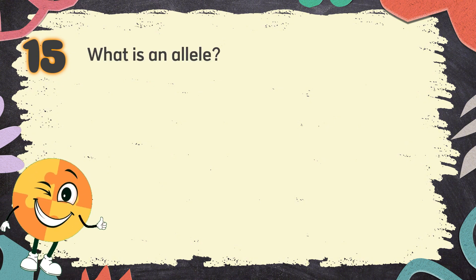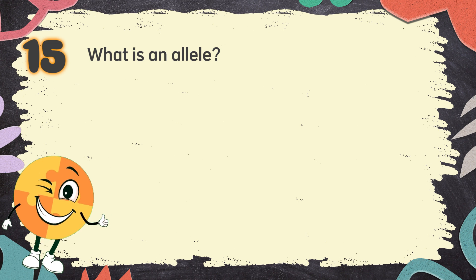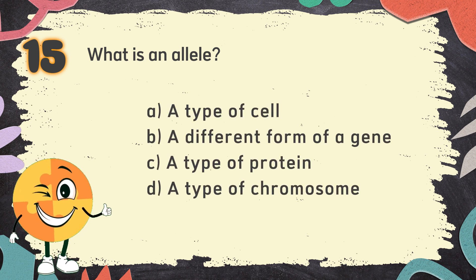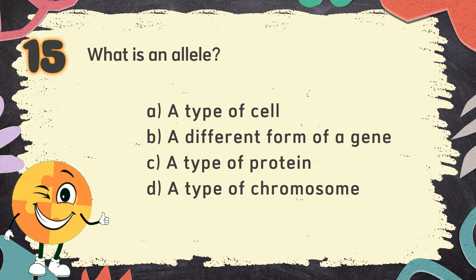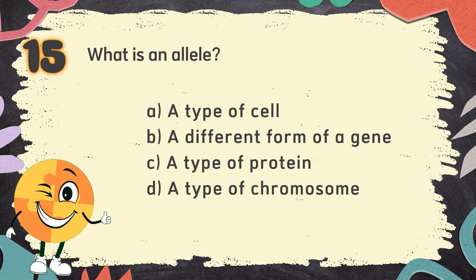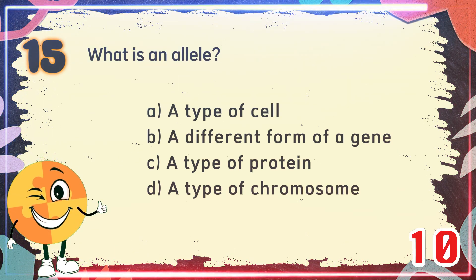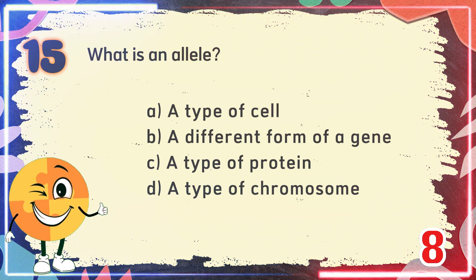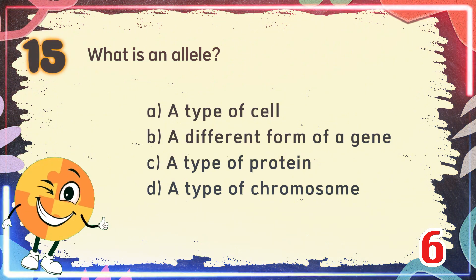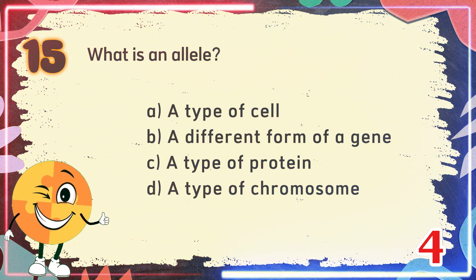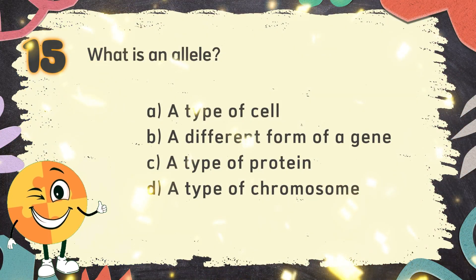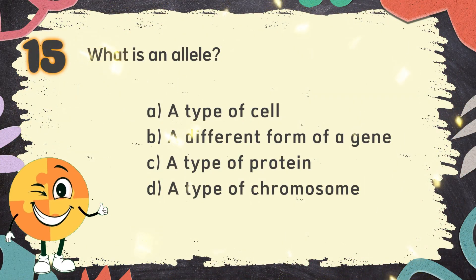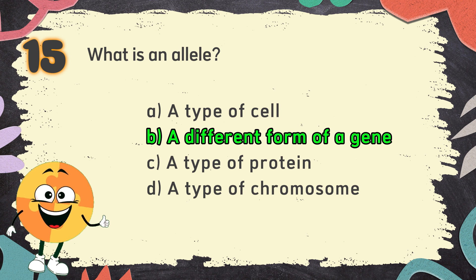Number 15. What is an allele? The choices are A. A type of cell, B. A different form of a gene, C. A type of protein, D. A type of chromosome. The correct answer is B. A different form of a gene.